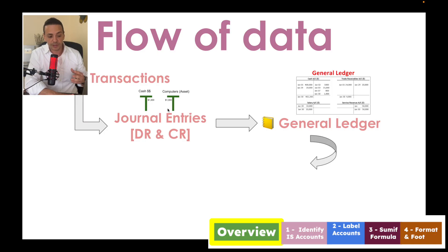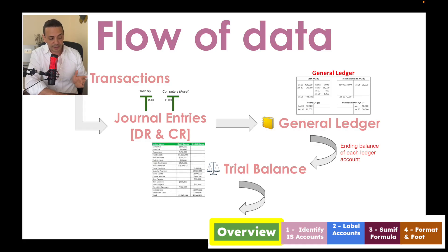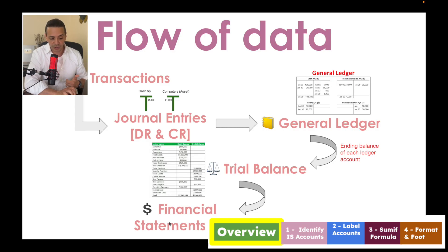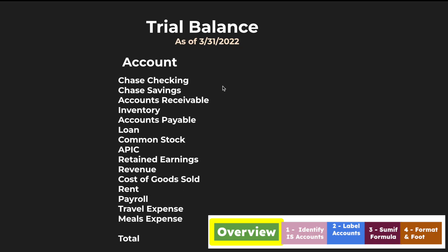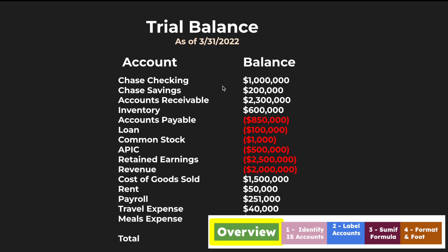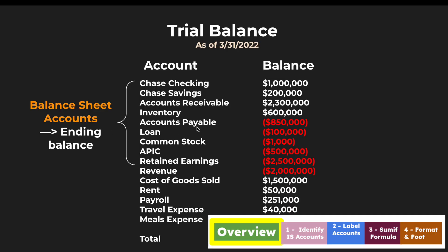At the end of each period, we take the ending balances of the general ledger and create what we call a trial balance, where we attempt to balance the debits and credits to make sure they're equal. From a trial balance, we can take the accounts, summarize and group them into financial statements — the income statement and balance sheet — and then combine those to create the statement of cash flows. For example, if we look at a trial balance as of March 31, 2022, we'll see all the general ledger accounts and their ending balances.